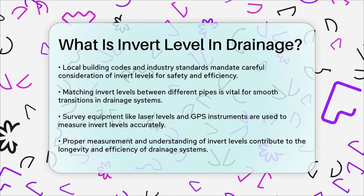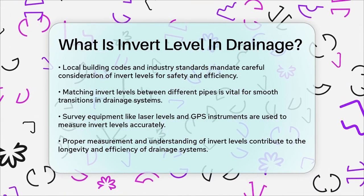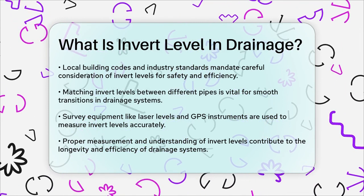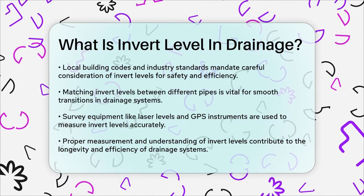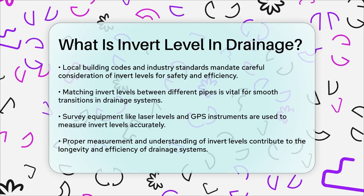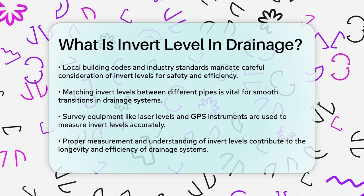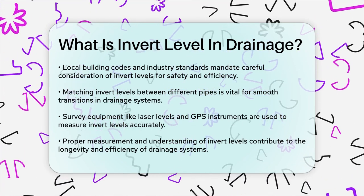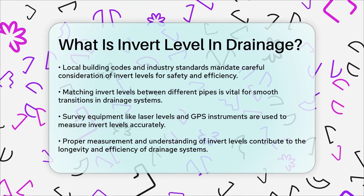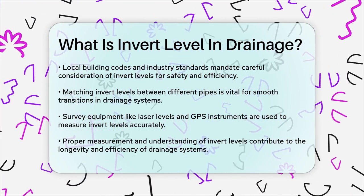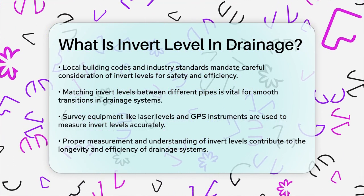In summary, the invert level of a pipe is a fundamental parameter in drainage engineering. It ensures proper water flow, prevents flooding and backflow, and helps in maintaining the efficiency and longevity of the drainage system. By understanding and accurately measuring invert levels, engineers and contractors can design and maintain drainage systems that work smoothly and effectively.